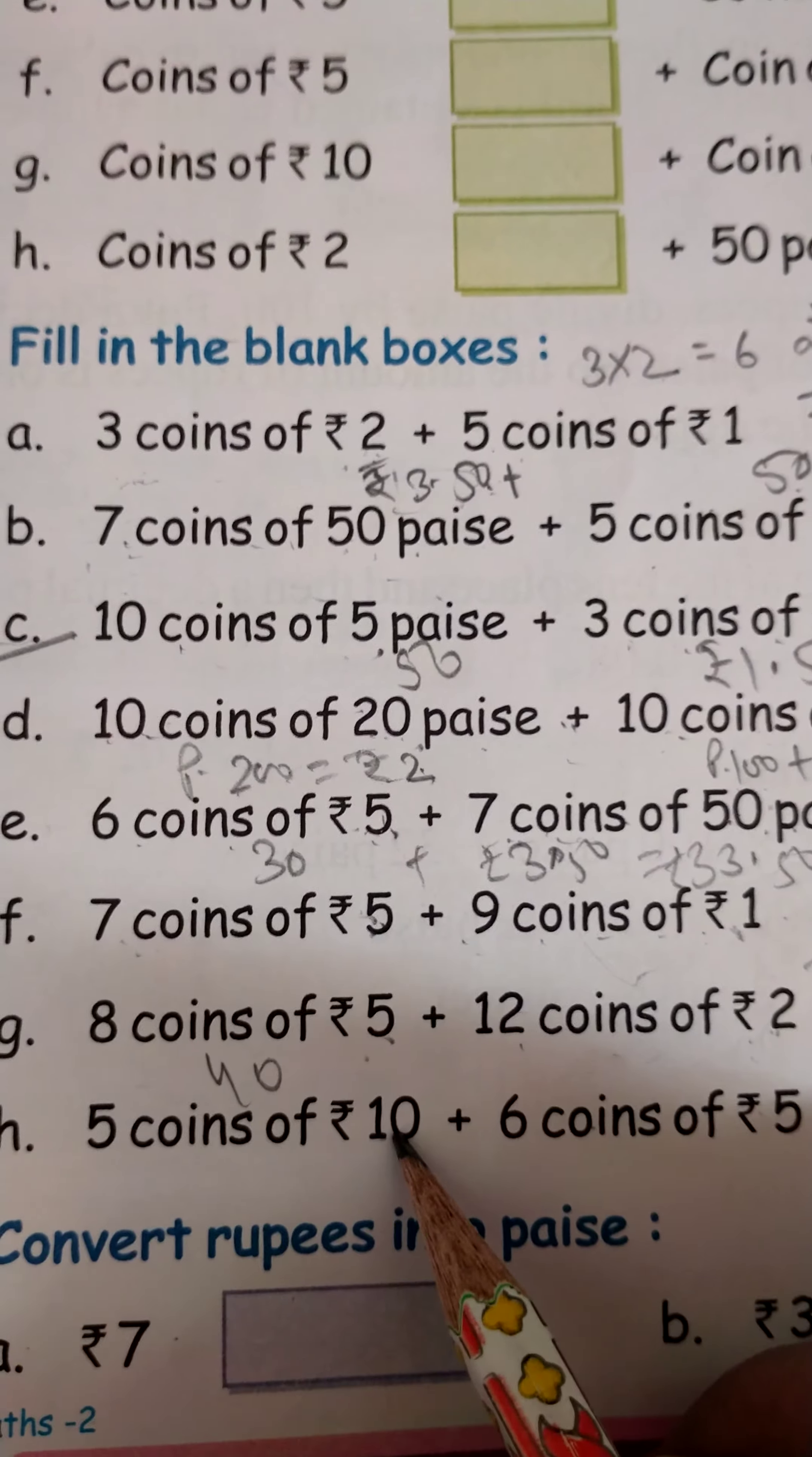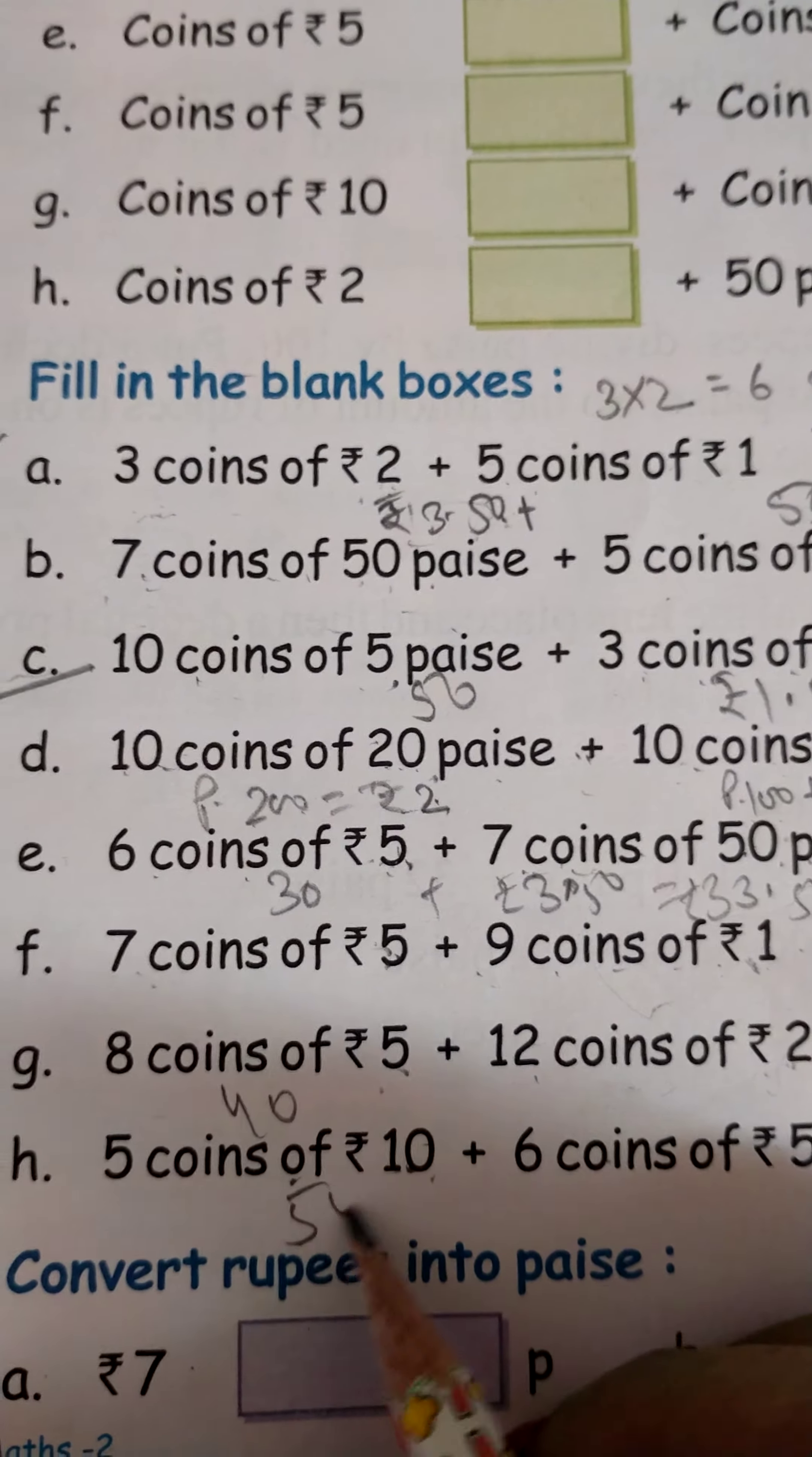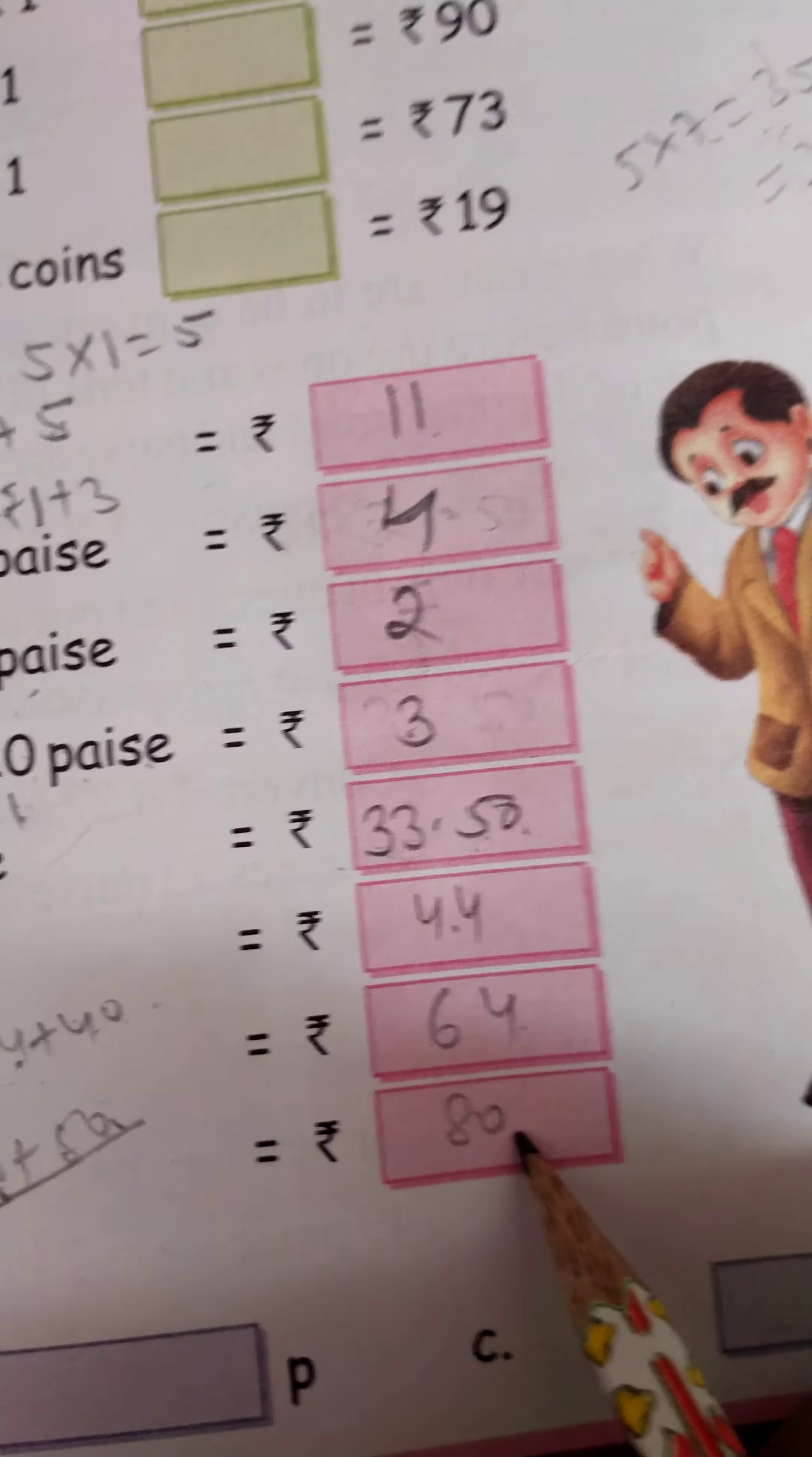5 coins of 10 rupees, that means 5 coins of 10 rupees, so how much? 50. And 6 coins of 5 rupees, so 6 into 5 is equal to 30. So 30 plus 50 is equal to rupees 80.